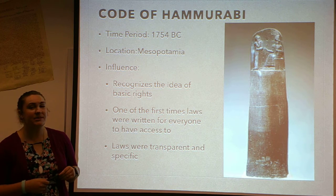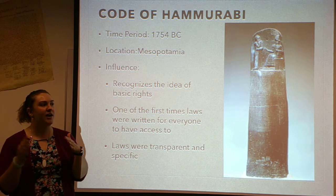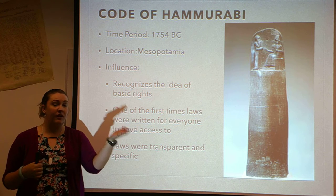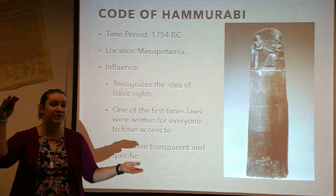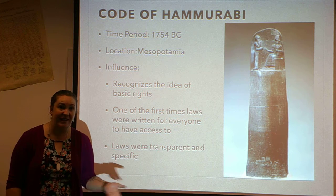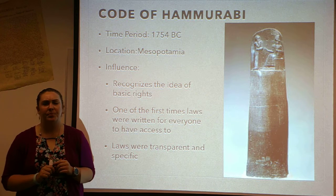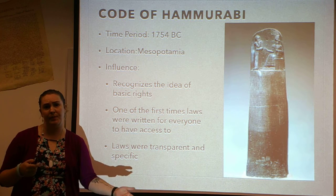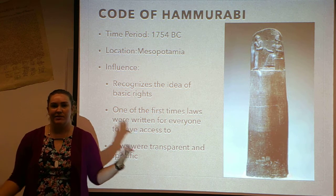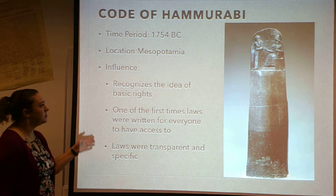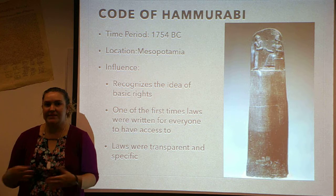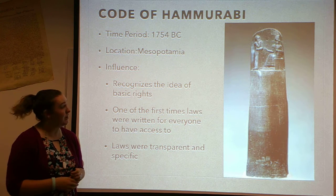Hammurabi was a king that was like, let's go ahead and think of everything that could go wrong. If you killed someone of a higher status, you're probably going to lose your life. If you killed somebody of a lower status, you're probably going to get a pretty heavy fine — you might even lose one of your own people of a lower status. Because in 1754 B.C., they had slaves. So this is where we start to get the basic idea of rights: that just because you want something doesn't mean that you can have it.